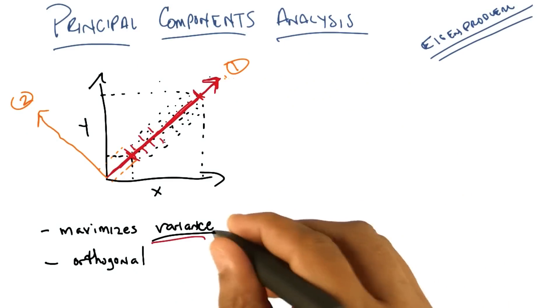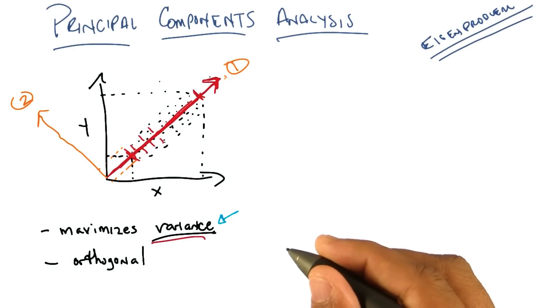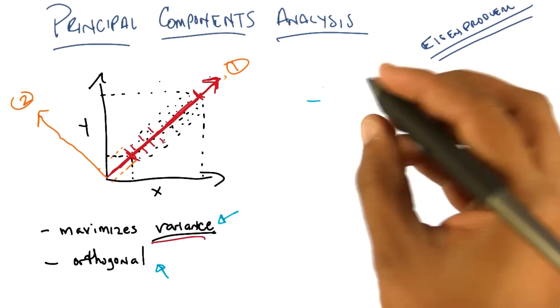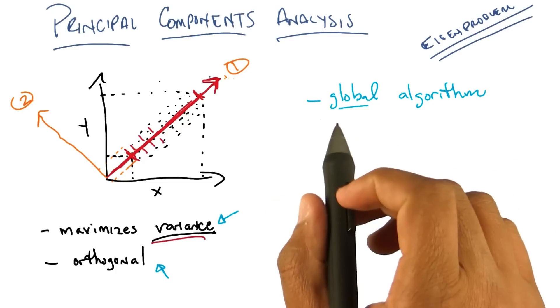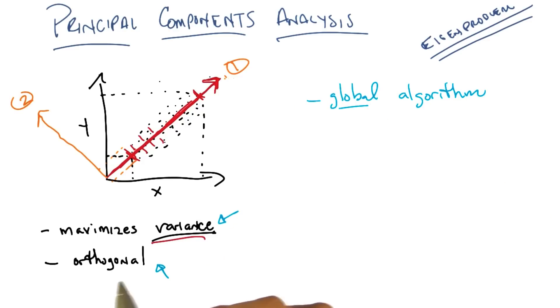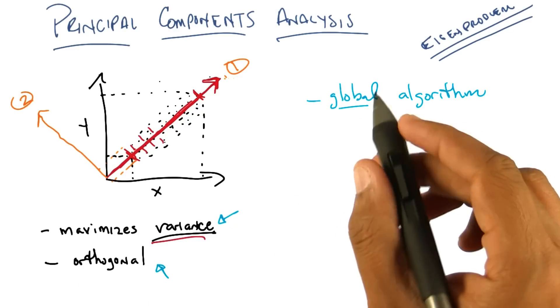The first property is, well, the two that I've written here. It finds directions that maximize variance, and it finds directions that are mutually orthogonal. Mutually orthogonal means it's a global algorithm. And by global here, I mean that all of the directions, all of the new features that they find have a big global constraint. Namely, that they must be mutually orthogonal.